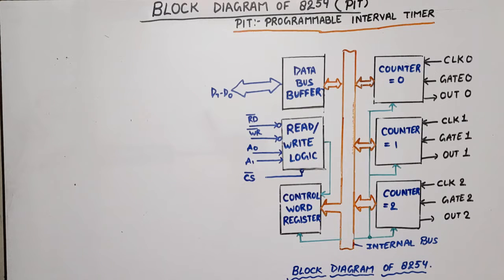8254 is a programmable interval timer. If you ask block diagram and internal architecture of 8254 and 8253, it will be the same. This is our 8254 interval timer.